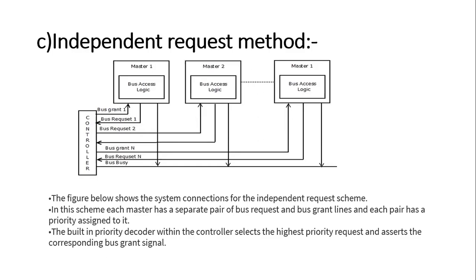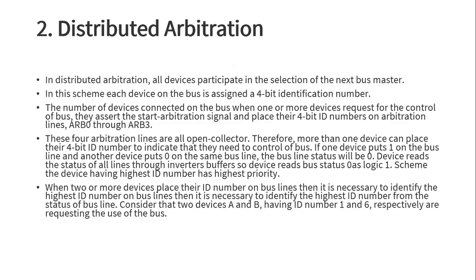When the grant is given, the device receives a grant signal and uses the bus. This is the independent request method. Next, we will talk about distributed arbitration. Arbitration is of two types: one is centralized and the second is distributed.